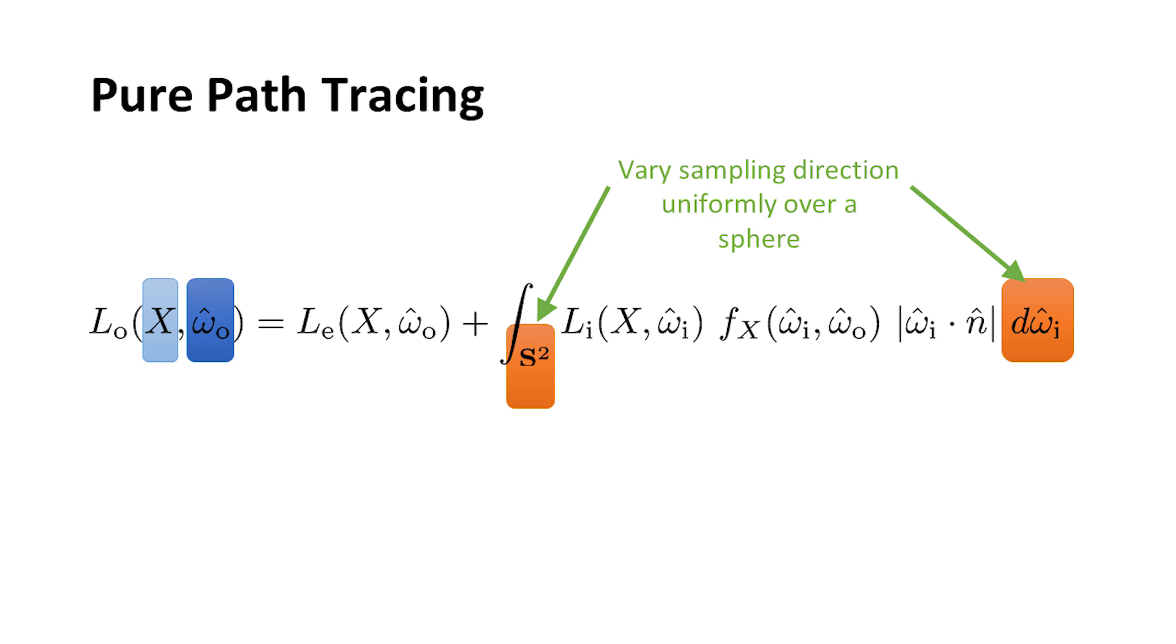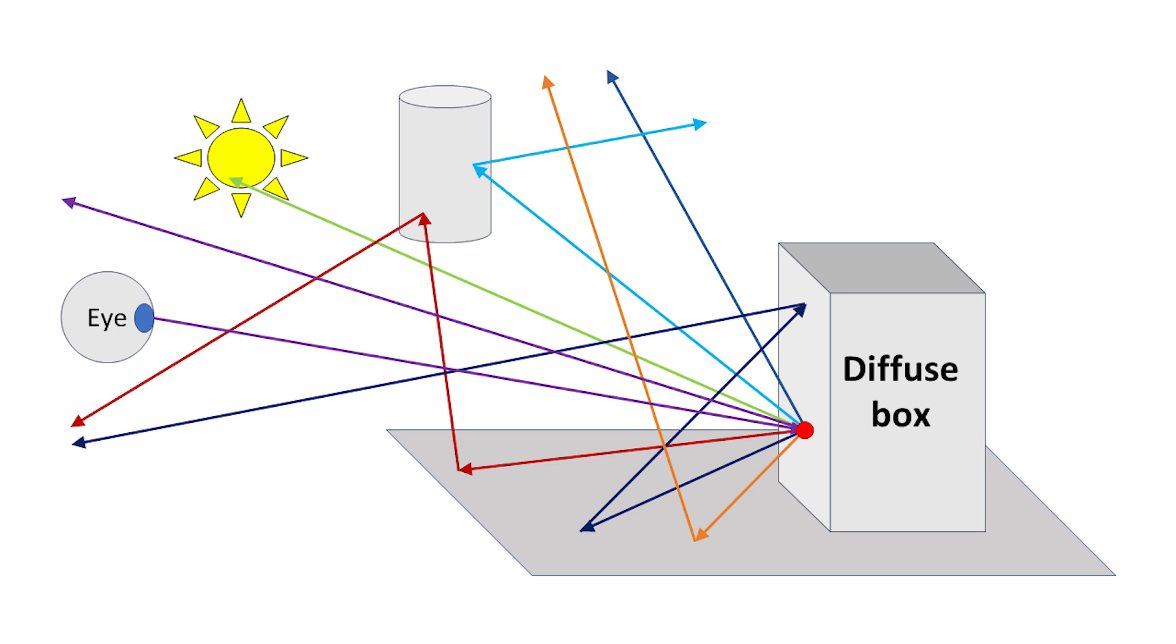So what pure path tracing does is it basically sums up the light in all directions, and that's what's going to go towards the eye. We shoot a ray from the eye and it hits this box, and then it scatters out rays in various directions. Each path is a different direction. One may go up and hit the sky, another one may go and hit the ground and bounce somewhere else, and we add up all the contributions of those paths to get the color at the eye.